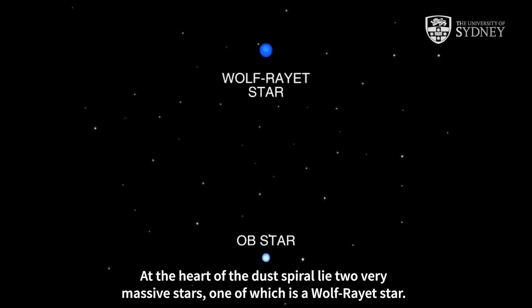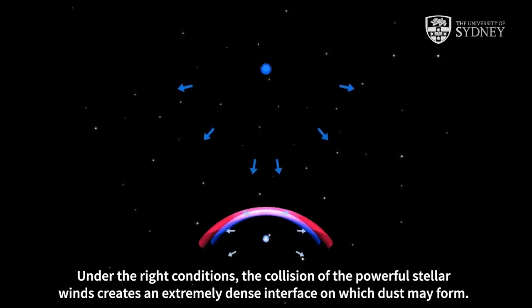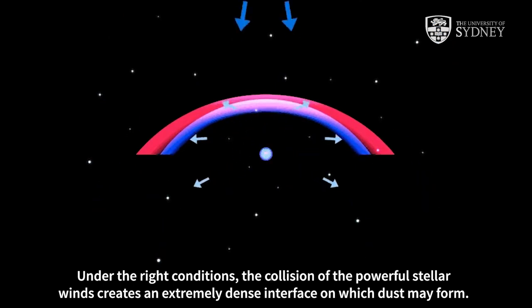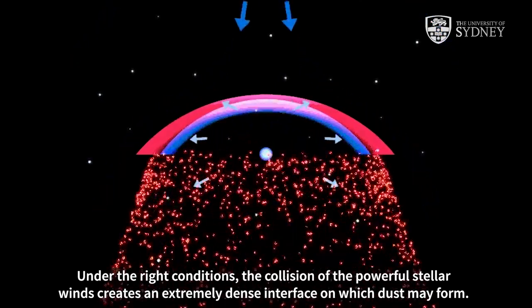At the heart of the dust spiral lie two very massive stars, one of which is a Wolf-Rayet star. Under the right conditions, the collision of the powerful stellar winds creates an extremely dense interface on which dust may form.